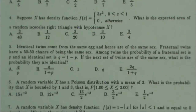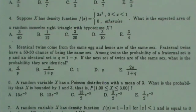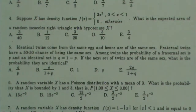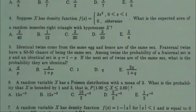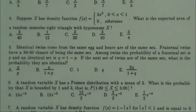Problem number five: identical twins come from the same egg and hence are always the same sex. Fraternal twins have a 50-50 chance of being the same sex. Among twins, the probability of a fraternal set is P and an identical set is Q equal to one minus P. If the next set of twins are the same sex, what is the probability they are identical?